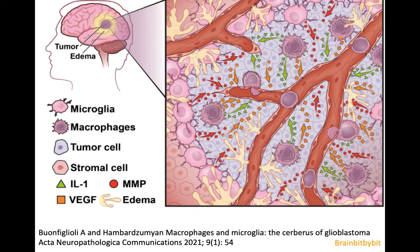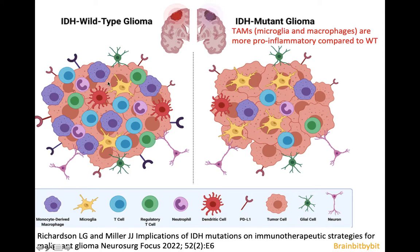In glioblastoma there are a lot of tumor cells resembling neural stem cells, along with macrophages and microglial cells. The microglial cells do not have memory cells, so they see these tumor cells — which resemble neural stem cells — and are programmed to help and interact with the cancer stem cells. So in high-grade gliomas, the microglia and macrophages are not fighting the tumor but helping it. In IDH wild-type glioma, even more macrophages and microglial cells are recruited by the tumor than in IDH mutant glioma. In IDH mutant glioma, the cells notice something is odd, so there are slightly more pro-inflammatory microglial cells and macrophages.